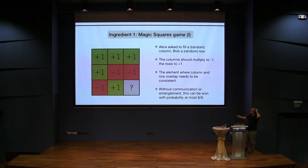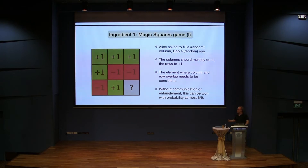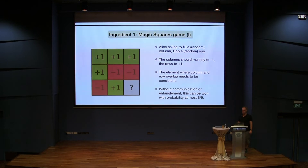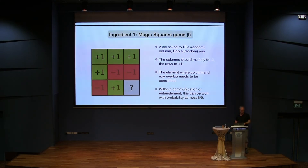For those who don't know it: it's a challenge between two players, Alice and Bob, who are both asked to fill in either the columns or the rows of a matrix with minus one and plus one, so that the rows multiply to plus one and the columns multiply to minus one. Alice is asked to fill one of the columns and Bob is asked to fill out one of the rows. The second condition is that at one point the row and the column will overlap, and at that point they have to give the same result. Without communication between Alice and Bob — even though they might agree on an arbitrary strategy beforehand — once they get their input they are not allowed to communicate anymore. It turns out this is classically impossible to solve with probability one.